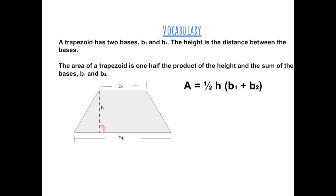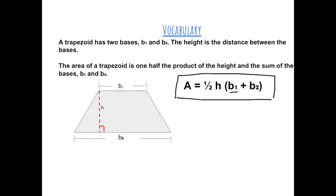A trapezoid has two bases, B1 and B2. The height is the distance between the bases. The area of a trapezoid is one-half the product of the height and the sum of the bases. So the formula for the area of a trapezoid is one-half times the height times the sum of base 1 and base 2.